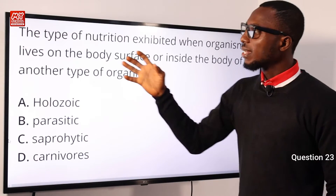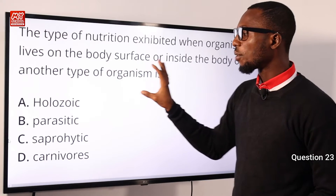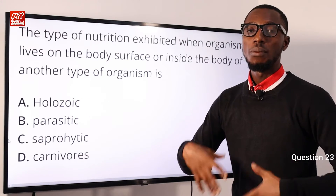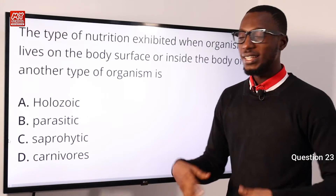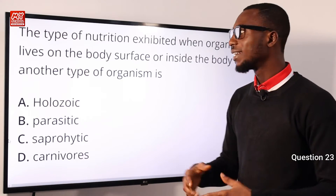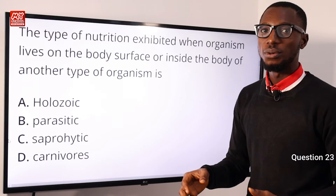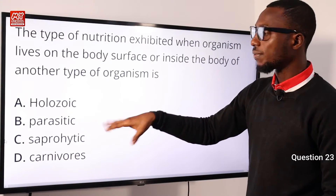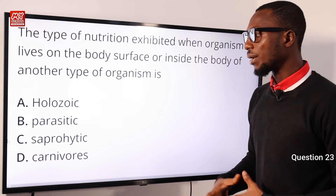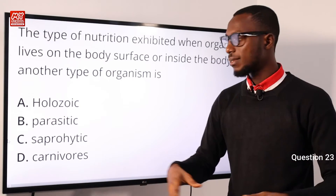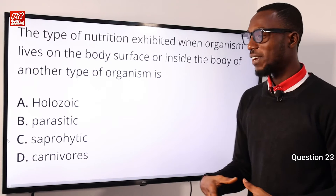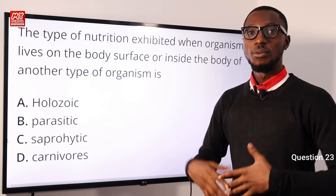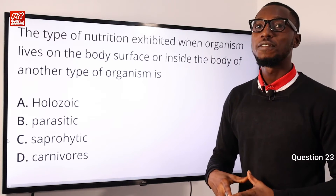Question 23: The type of nutrition exhibited when an organism lives on the body surface or inside the body of another organism is parasitic nutrition. Holozoic nutrition is obtaining nutrients by ingesting organic material. Parasitic means living on or inside another organism — that organism becomes your host — like lice or ticks on animals, or internal worms in man or pigs. Saprophytic means living on dead things. Carnivorous means hunting another animal for food, like dogs or cats. The correct option is B for parasitic.